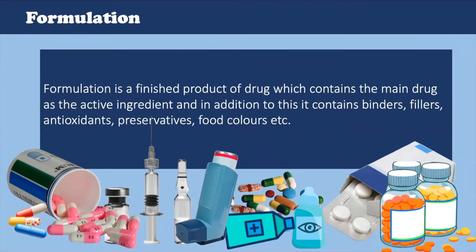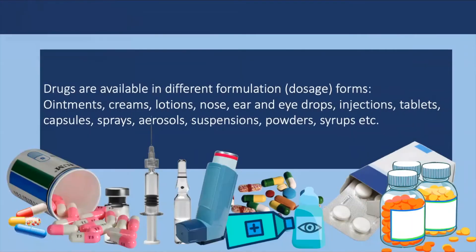Formulation studies involve developing a preparation of the drug which is both stable and acceptable to the patient. For orally administered drugs, usually the drug is made in a tablet or capsule. Pre-formulation involves the characterization of the drug's physical, chemical and mechanical properties in order to choose what other ingredients or excipients should be used in their preparation. The drug form varies by the route of administration like capsules, tablets and pills.